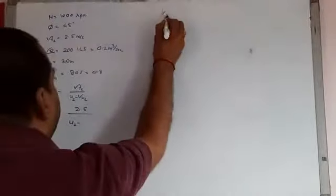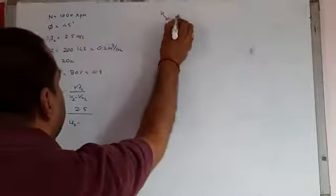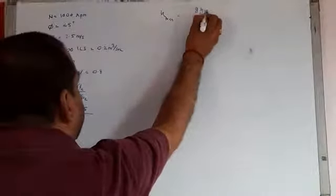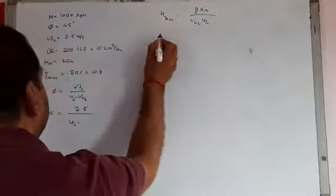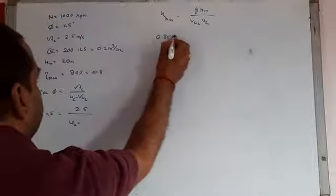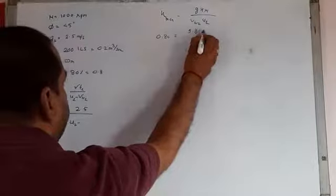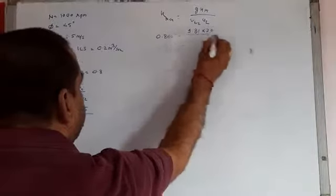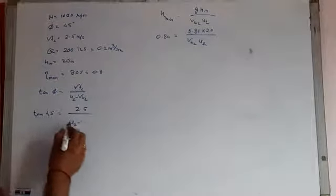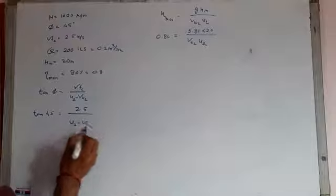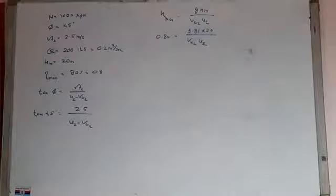We have to find out, so taking one more equation, eta manometric equal to G HM by VW2 U2, so this is 0.80 into 9.81 into 20 by VW2 U2, and here this is also U2 minus VW2. Now from both of these equations,